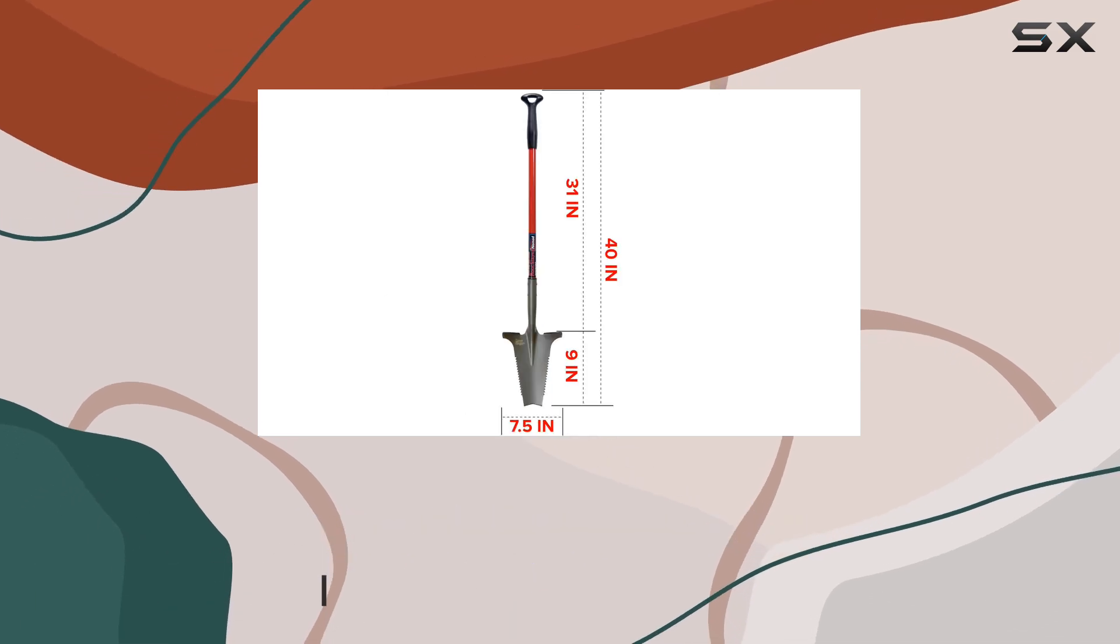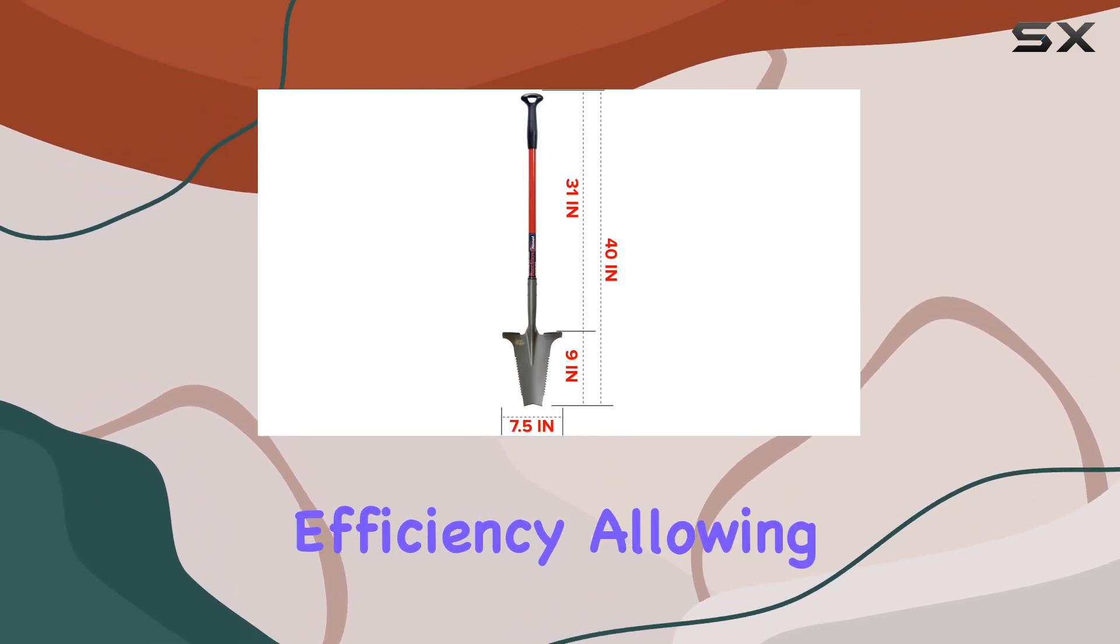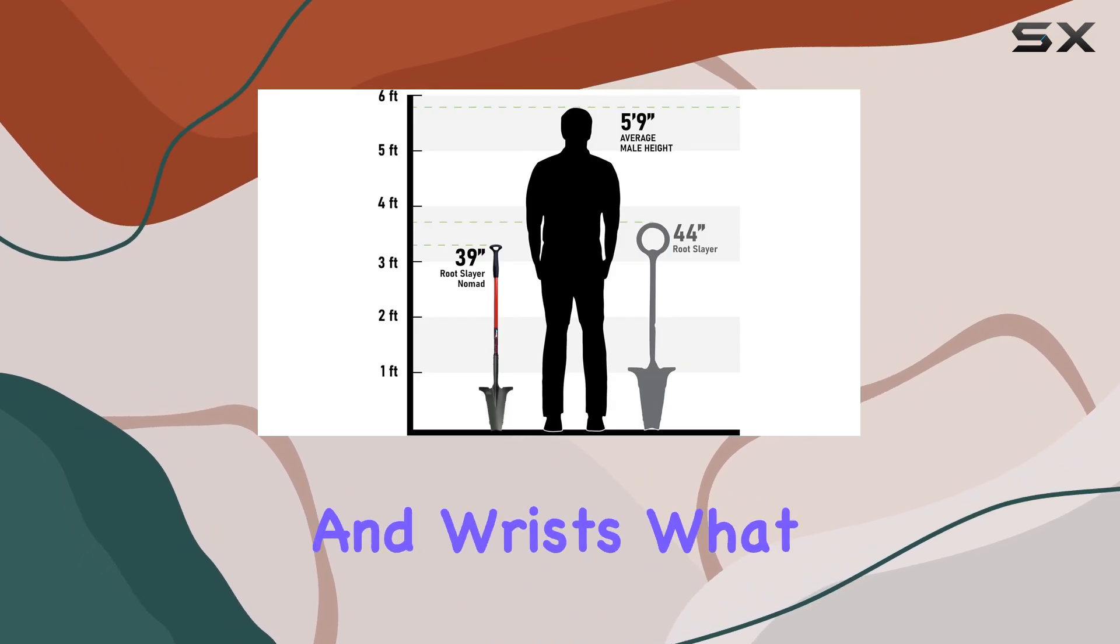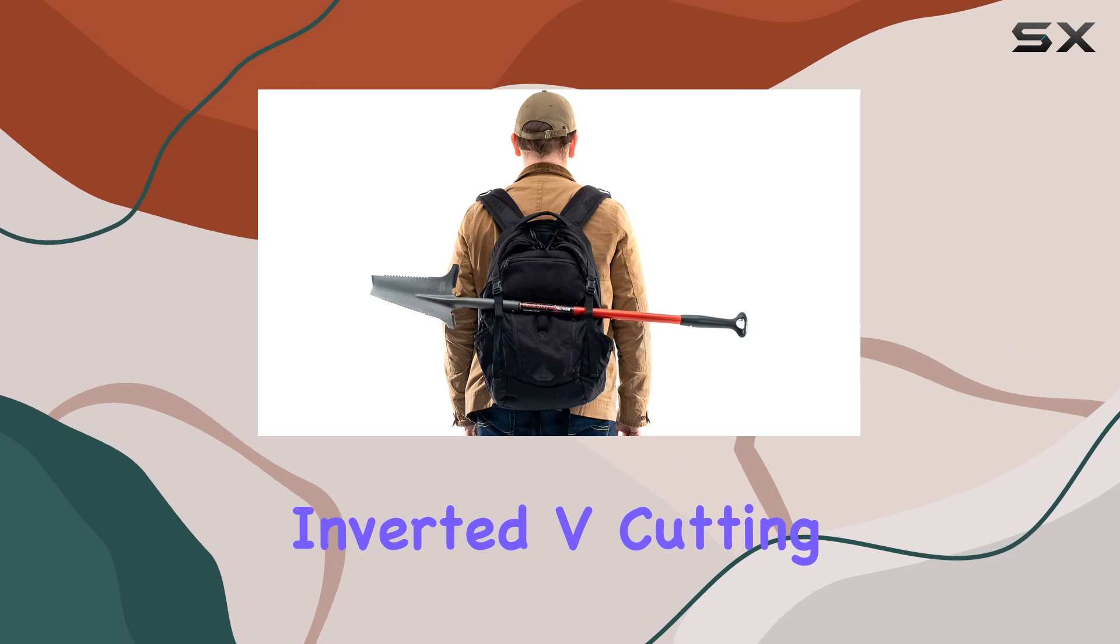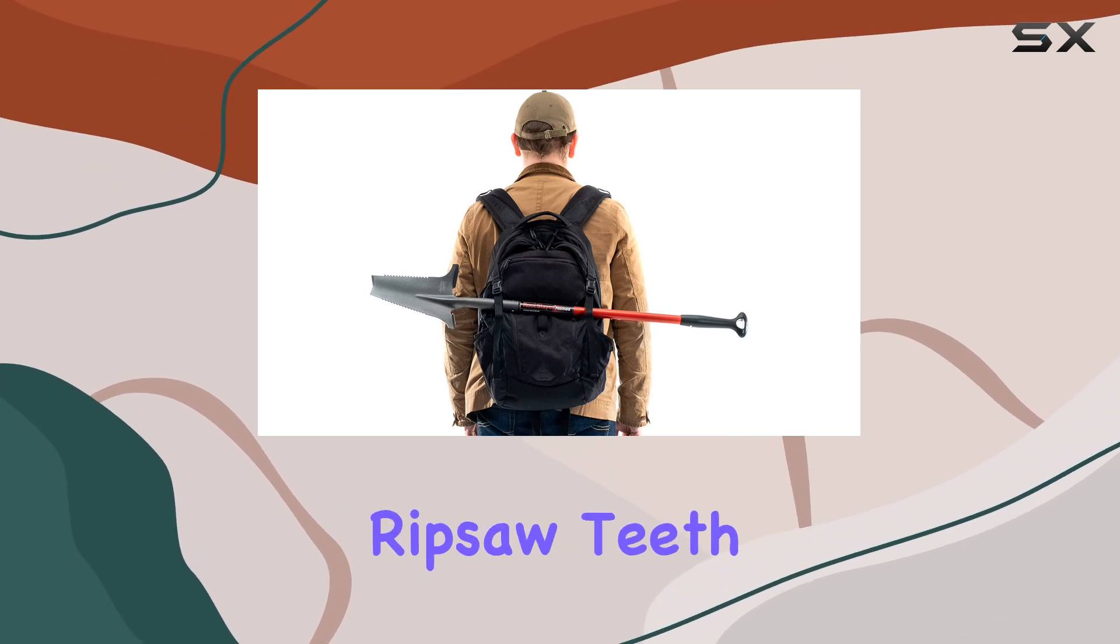The polypropylene grip is designed for maximum comfort and efficiency, allowing for less strain on your hands and wrists. What truly sets this tool apart is its patented inverted V cutting blade paired with root cutting ripsaw teeth.